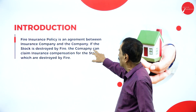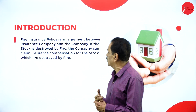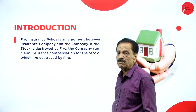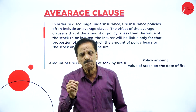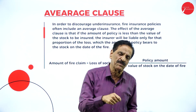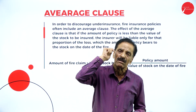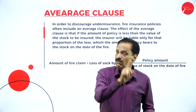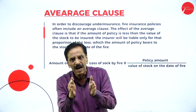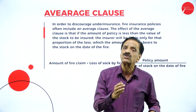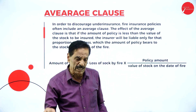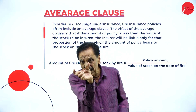In introduction, I'll explain what fire insurance is. A fire insurance policy is an agreement between the insurance company and a company: if the stock is destroyed by fire, the company can claim insurance compensation for the stock which was destroyed. The insurance company is obligated to pay compensation to the extent of the particular stock which has been destroyed.